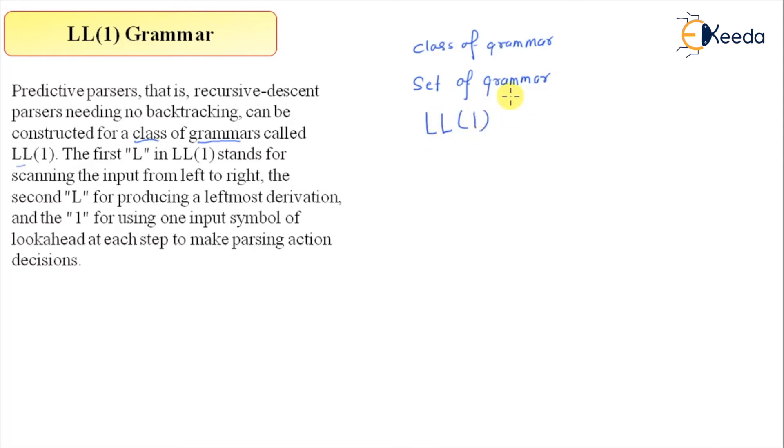LL1. So whatever the grammar that predictive parser recognizes we term this as LL1 where L stands for scanning the input from the left hand side. So this is from scanning input from left to right. That is the first term.